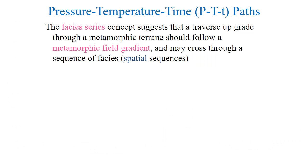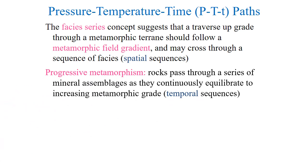The facies series concept suggested that a traverse upgrade through metamorphic terrain should follow a metamorphic field gradient and may cross through a sequence of facies. This is a spatial sequence. Progressive metamorphism, though, suggests that rocks pass through a series of mineral assemblages as they continuously equilibrate to an increasing metamorphic grade, or a temporal sequence.